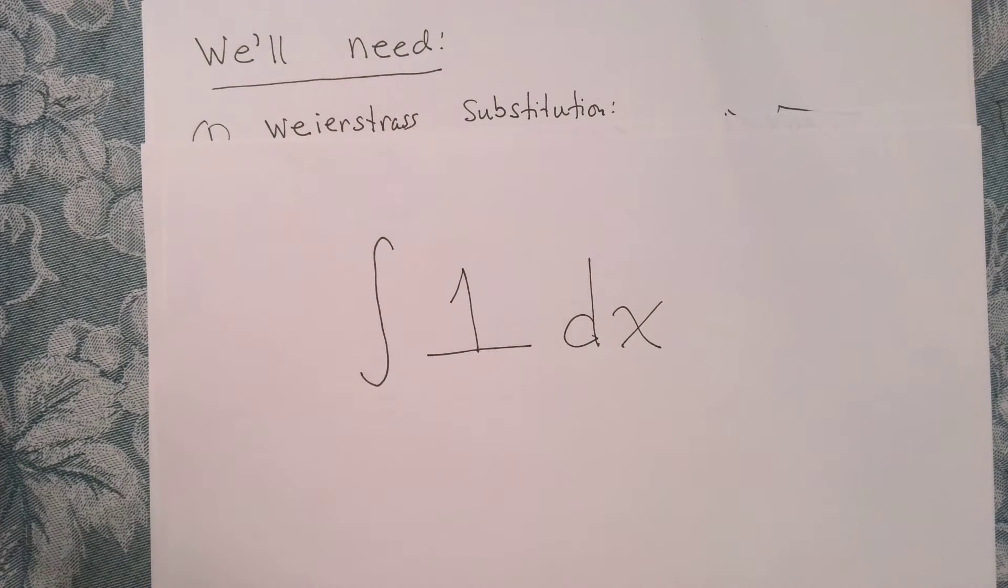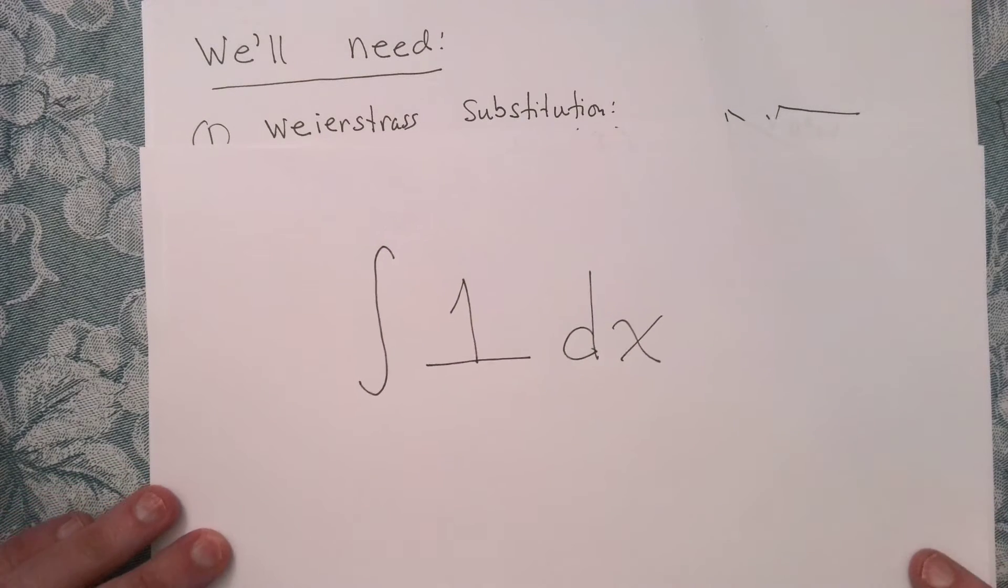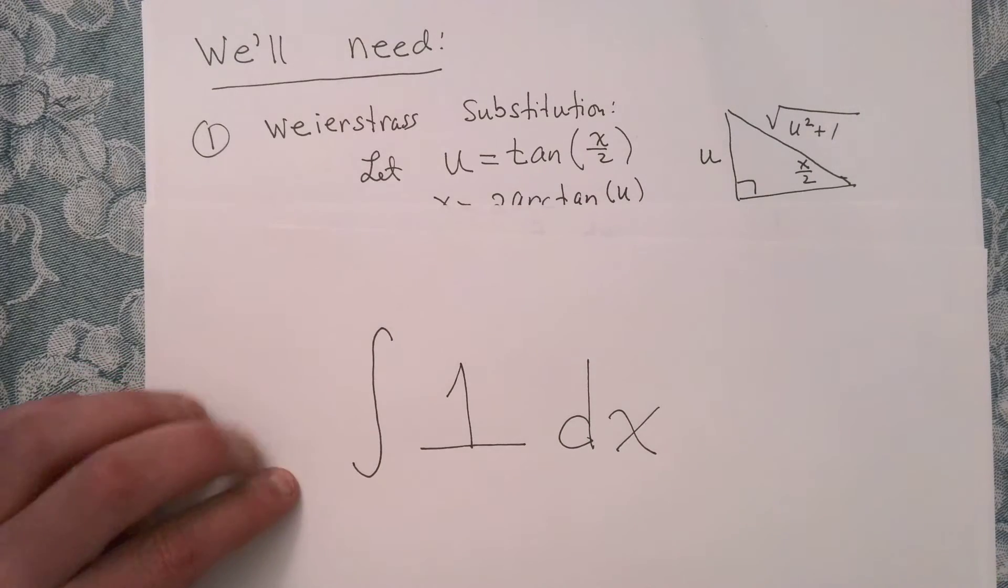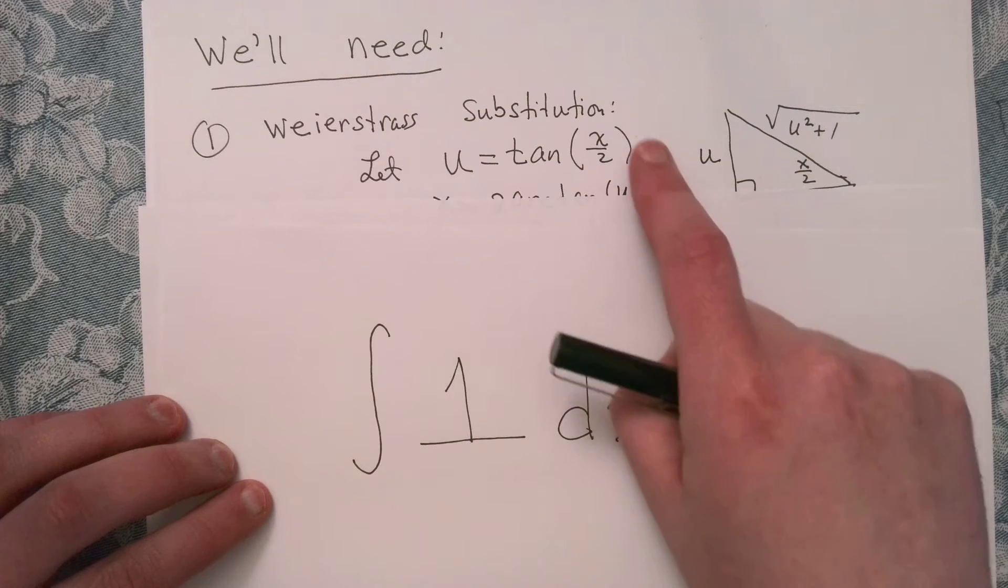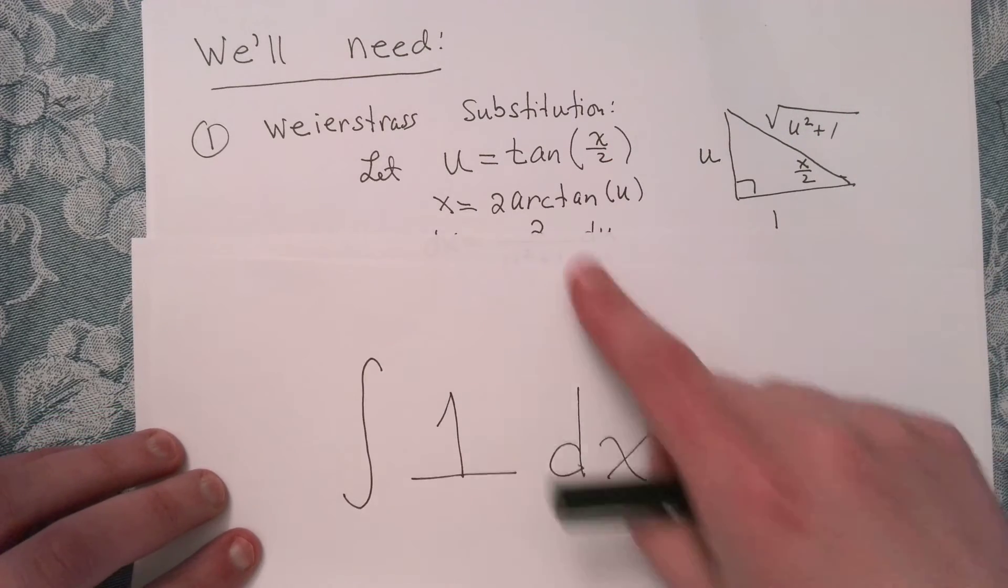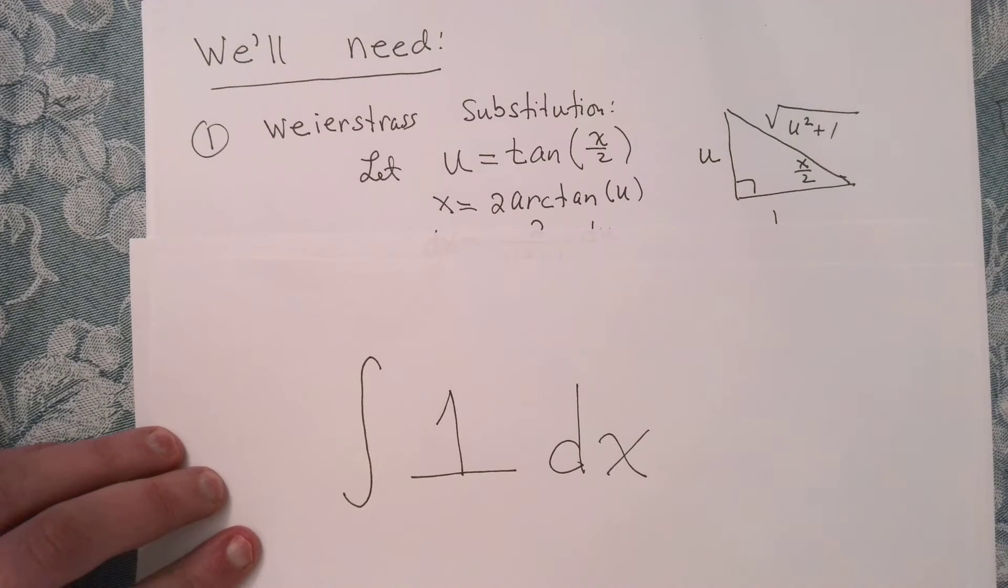So in order to compute the integral of 1 dx in this way, we're going to need the following. So we're going to use a Weierstrass substitution. And so remember, I've got a video going through the Weierstrass substitution. But the idea is you let u equal tangent of x over 2. You can fill out a right triangle. And from that, you can of course solve for x just by taking the arctangent on both sides.